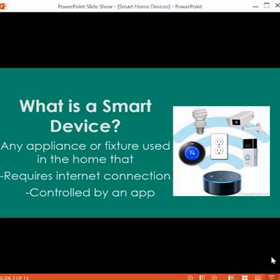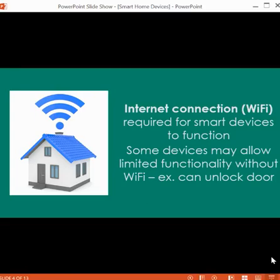It's a broad topic with lots of different options. You do need an internet connection for smart devices to function — generally Wi-Fi in your home. A stable Wi-Fi connection gives you full functionality. Without Wi-Fi, devices may have limited functionality, so check before you buy. For example, a smart lock should still have a way to unlock it if your internet or electricity is down.